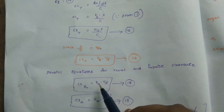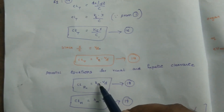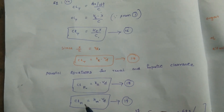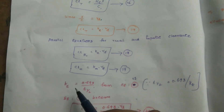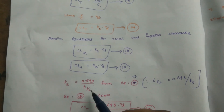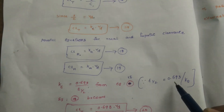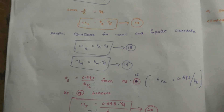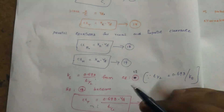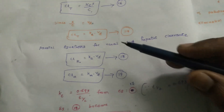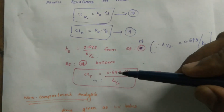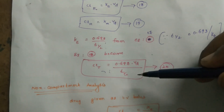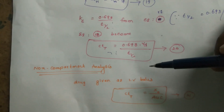Since t½ equals 0.693 / ke, we can make ke the subject: ke equals 0.693 / t½. Substituting ke into the total clearance equation gives: total clearance equals 0.693 × Vd / t½.